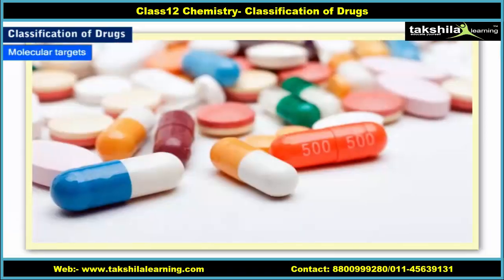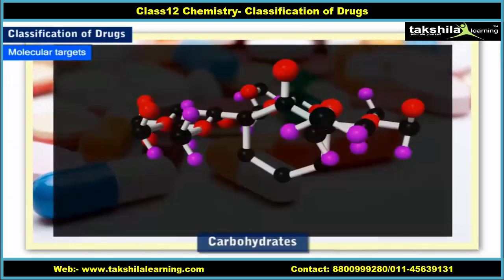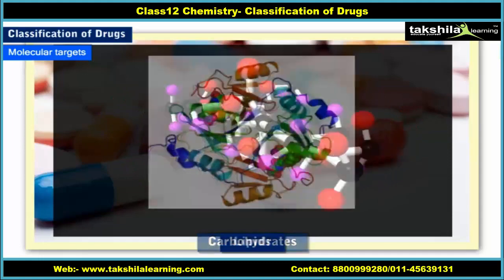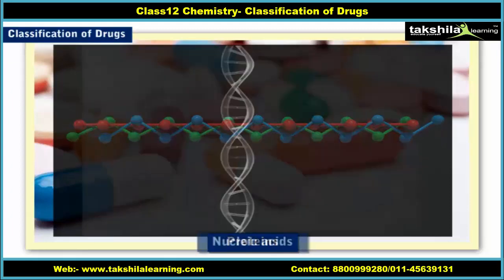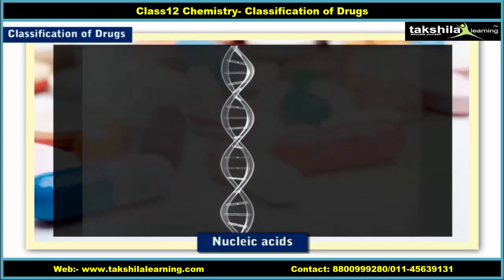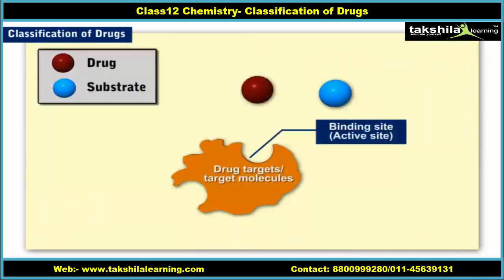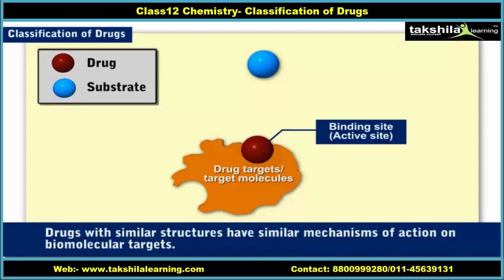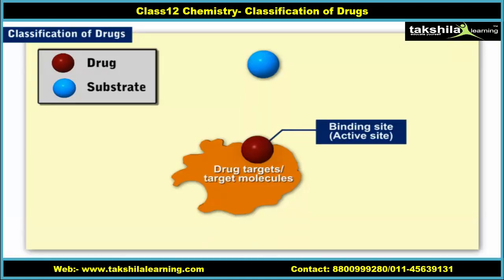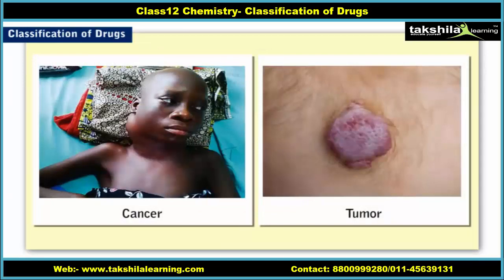Drugs usually interact with biomolecules such as carbohydrates, lipids, proteins, and nucleic acids. These biomolecules are called drug targets, or simply target molecules. Drugs with similar structures have similar mechanisms of action on biomolecular targets. Drugs classified as per their molecular targets are especially used in the treatment of major ailments such as cancers and tumours.